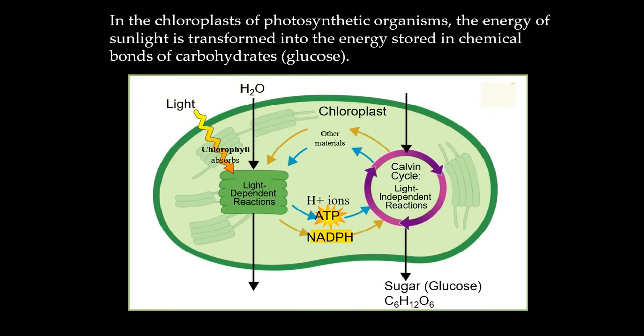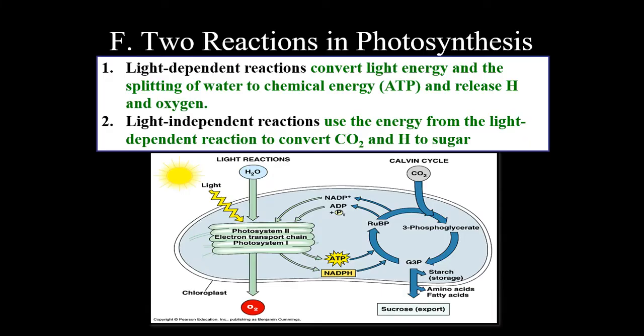In the chloroplasts of photosynthetic organisms, the energy of sunlight is transformed into the energy stored in chemical bonds of carbohydrates known as glucose.